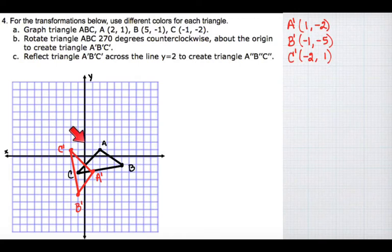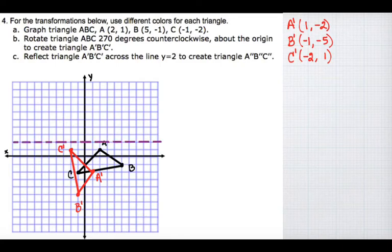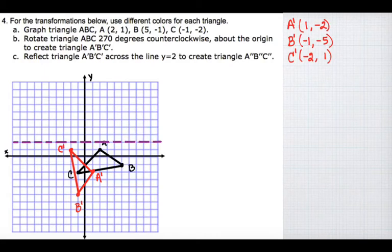I'm going to reflect this red triangle across the line y equals 2. Y equals 2 would be right here on the y-axis — the line has to be horizontal, going through y equals 2. Here's my line of reflection — this is the line at y equals 2. If you drew the line vertically, that would be x equals 2. So here we have y equals 2.